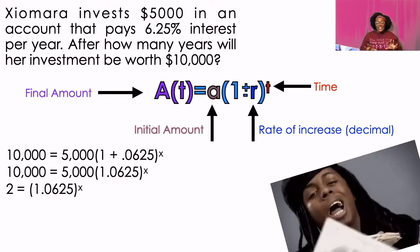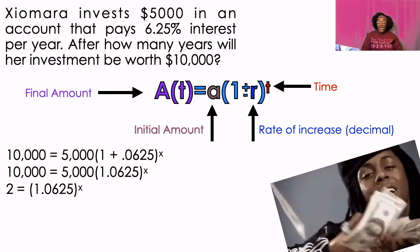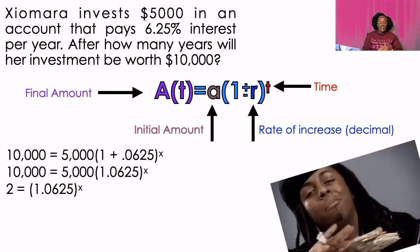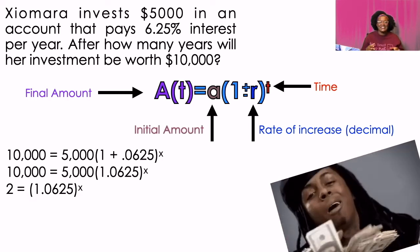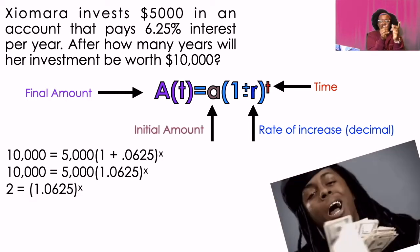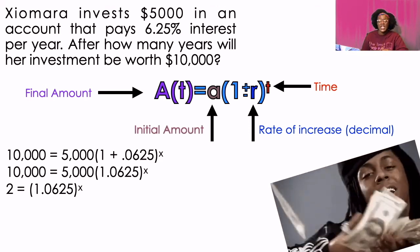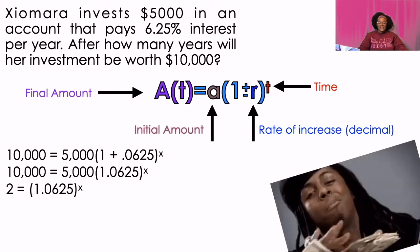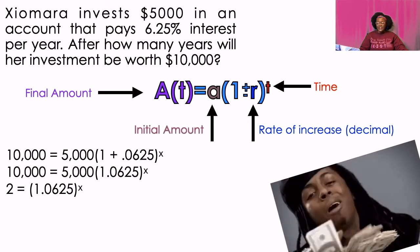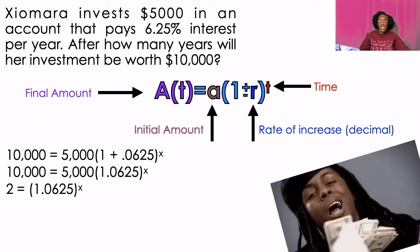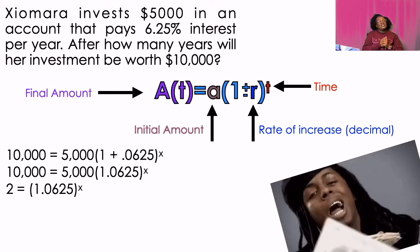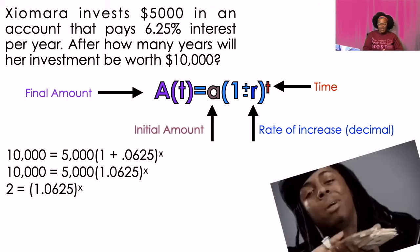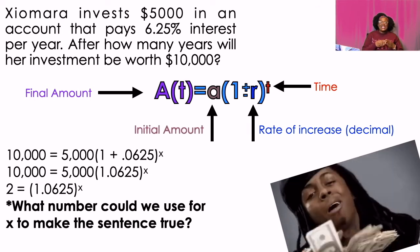So what I did was I plugged everything into the problem. I divided by 5,000 because I want to get that exponent part of the problem by itself. So 10,000 divided by 5,000 gives me two. So right now I have two equals 1.0625 to the power of X. But what is X? How do I get that X by itself? This is a very interesting question. You do not know how to do this yet. At least if you're in my class and we're at this lesson, you don't know how to do this yet. So right now we're going to guess and check. You're going to plug a number into X and we're going to see if we can figure out approximately how many years it would take for that money to double. So we can try a few numbers. I want you to take your calculator and I want you to try a few numbers. I will wait, pause the video. I will give you a clue. It is between zero and 20. So try a number, pause the video, see if you can figure it out. What number could we use for X to make the sentence true?